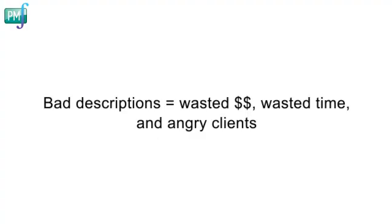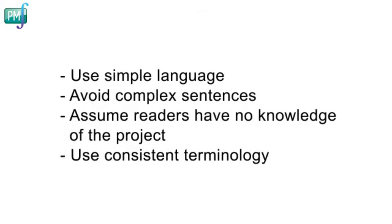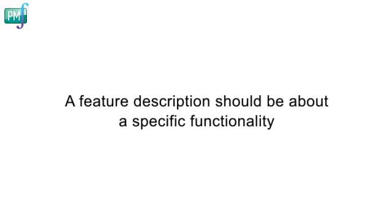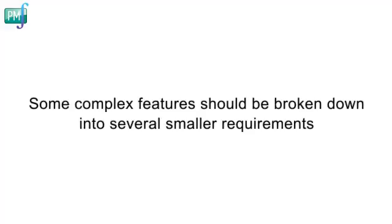That would cost you a great deal of money, waste a lot of time, and leave you with extremely angry clients. So it's very important to have a clear, detailed, and organized description of how the features should work. Use simple language, avoid complex sentences, and assume the readers have no basic knowledge of the project. Use consistent terminology, utilizing the same terms throughout the document so that no one will get confused. If the feature description starts to get too long, you might want to consider dividing it into a few smaller features. The idea is that a feature description should be about a specific functionality, but keep the balance of not going into too much resolution. You don't define a requirement for every button on the screen, but if a feature includes a smaller feature that has a different role and requires detailed definition, you should break it into several smaller requirements.